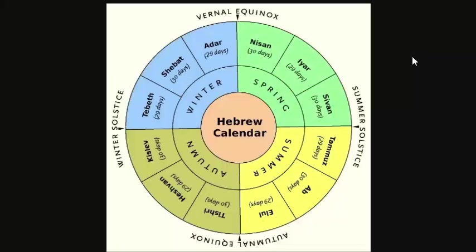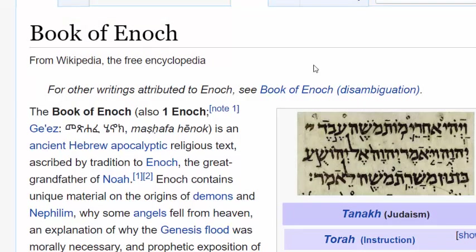The first thing we need to do is establish how the sacred calendar works — the Hebrew calendar, our Father's calendar. It is nothing like the calendar that we're used to. In fact, you will only start to understand the Hebrew calendar when you learn to separate it from the Gregorian calendar. You have to completely ignore everything about the Gregorian calendar or it will keep you confused.